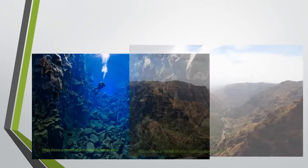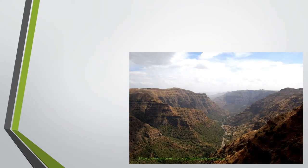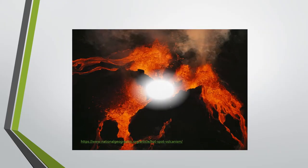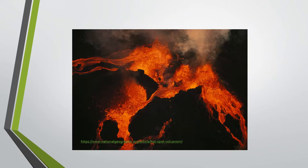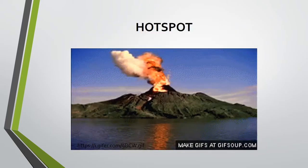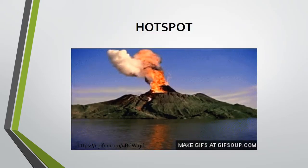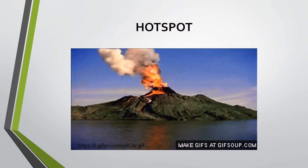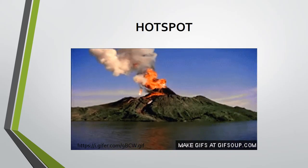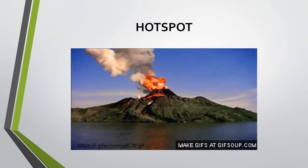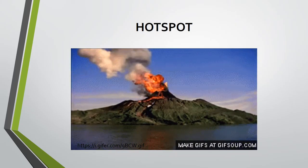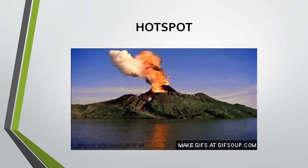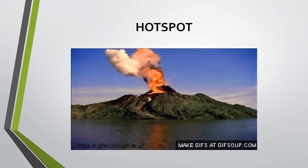But not all processes and formations happen along the plate boundaries. Some volcanoes were formed in the middle of the plate, and this is because of the so-called hot spot. A hot spot is a fixed region in the upper mantle that is relatively hot compared to its surroundings, where there is an upwelling and melting of the crust to form a volcanic feature.